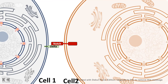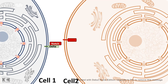When Notch and Delta interact with each other, a protease known as ADAM cleaves Notch at its extracellular domain and transmembrane domain interface. This particular cleavage type is known as S2 cleavage. As a result, the Notch extracellular domain is freed out — it's still interacting with Delta — but the other portion, the intracellular domain, is still hanging from the membrane.